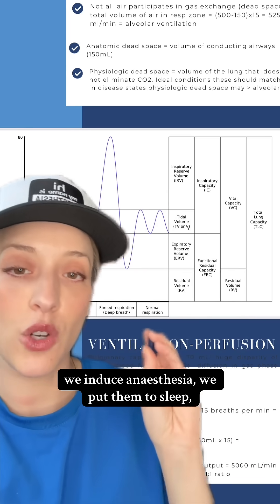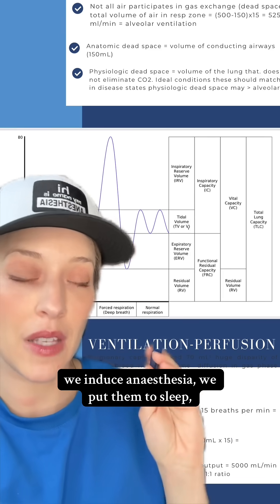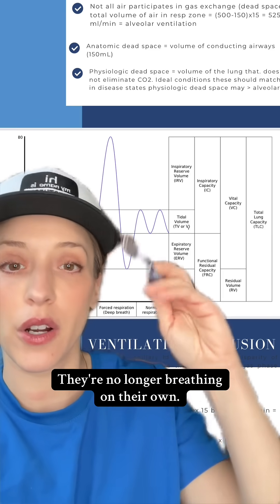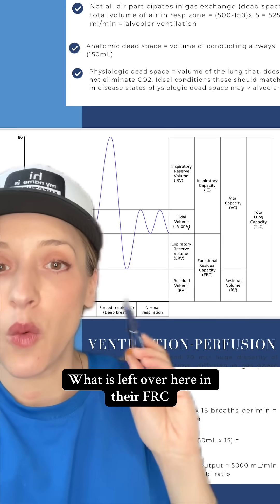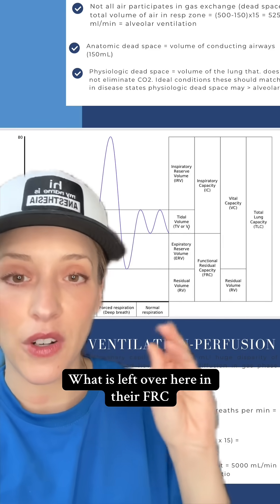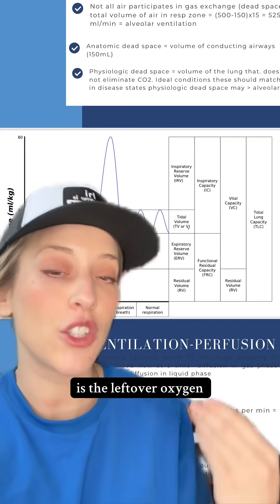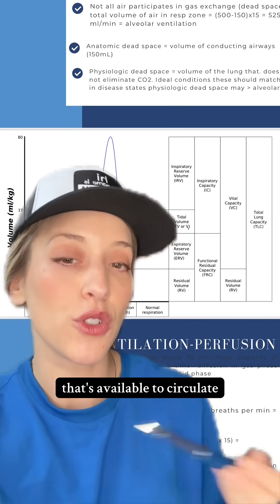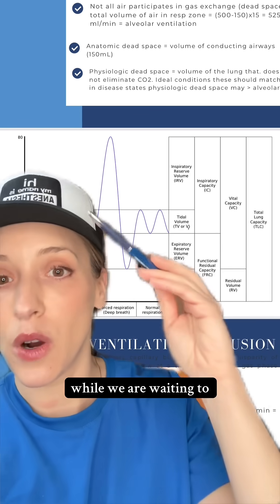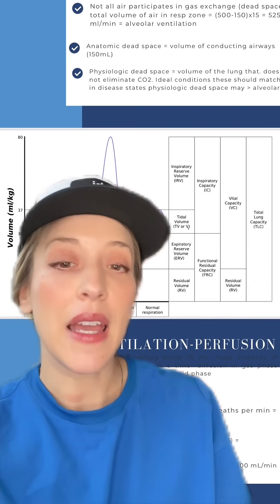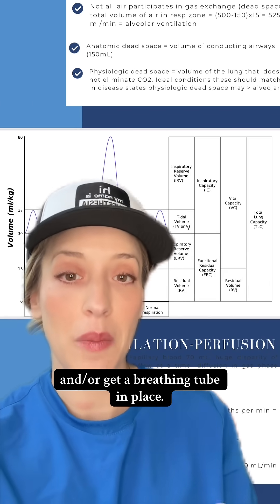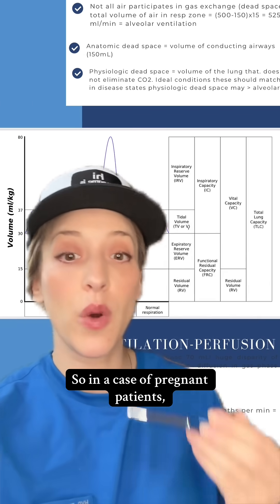The FRC is our reserve for oxygen for when we are not breathing. When we induce anesthesia, we put the patient to sleep, knock them unconscious — they're no longer breathing on their own. What is left over in their FRC is the leftover oxygen available to circulate through their bloodstream while we are waiting to ventilate them manually and/or get a breathing tube in place.